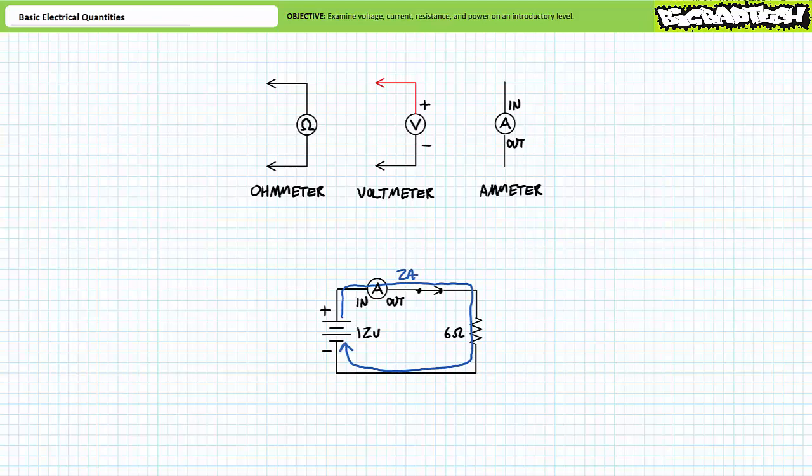In conclusion, this lecture presented the basic electrical quantities of voltage, current, resistance, and power at an extremely introductory level. We discussed the units to measure these quantities, common instrumentation used to measure these basic quantities, and the means of calculating these quantities.